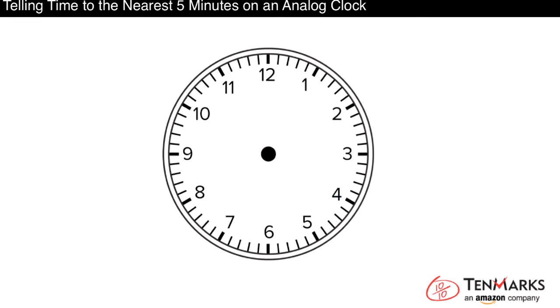It can be helpful to memorize some of the minutes on a face clock. For example, 3 is 15 minutes, 6 is 30 minutes, and 9 is 45 minutes. If you know this, then you don't have to start at the 12 all the time. You could start at the 3, 6, or 9 and count on.